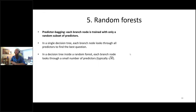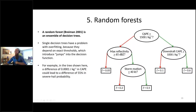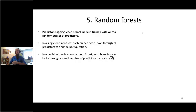The second way random forests maintain diversity is predictor bagging, also called feature bagging or feature subsetting. Each branch node is trained with only a random subset of predictors. The default is to take the square root of the total number of predictors — so if you have 41 predictors, you round the square root of 41 to about 6 or 7, and at each branch node you randomly select only those 6 or 7 predictor variables to loop over instead of all 41. This ensures each decision tree ends up different from the others in the forest.